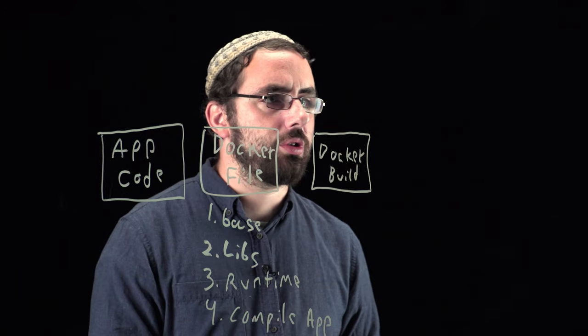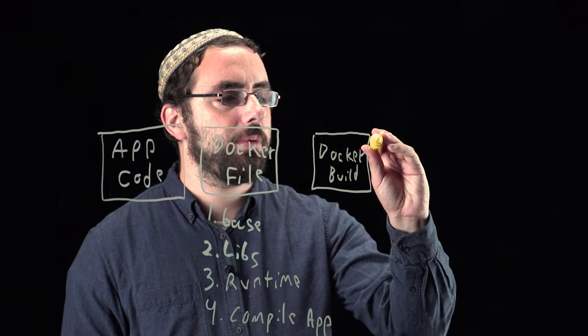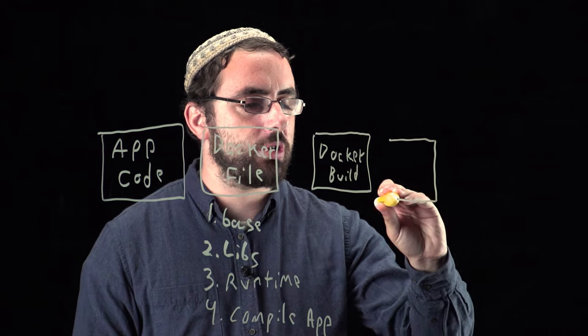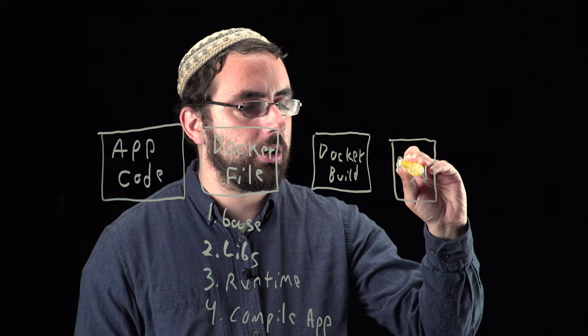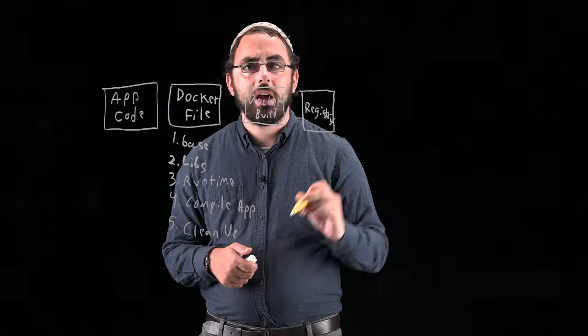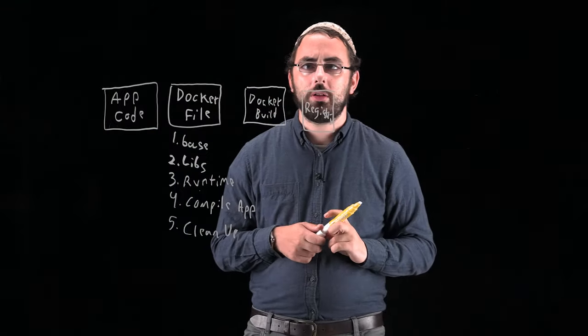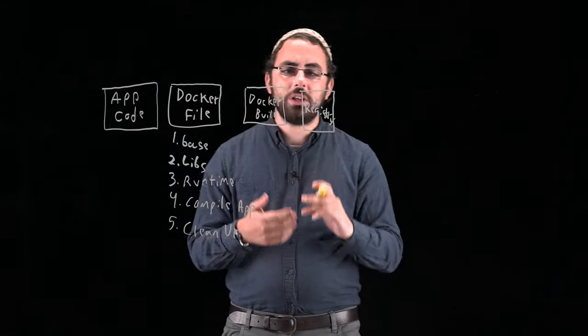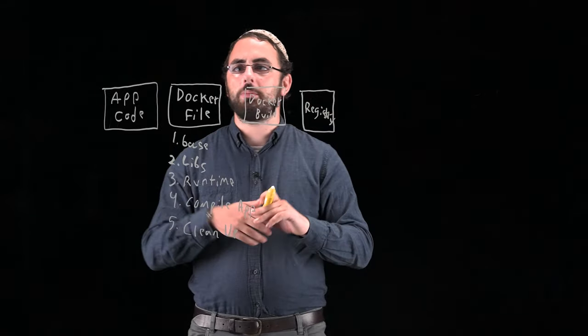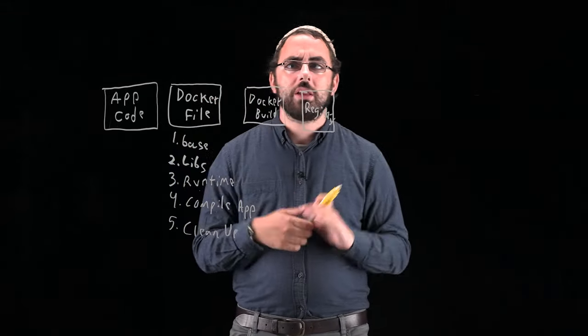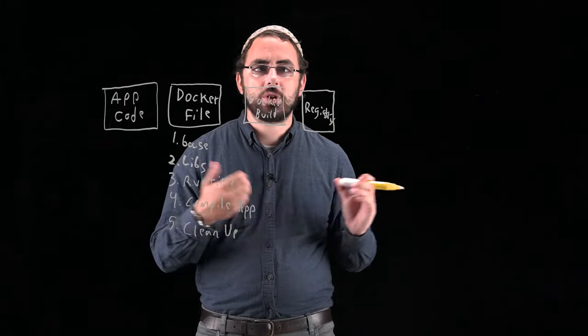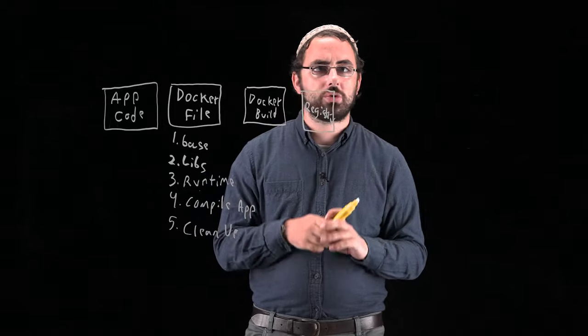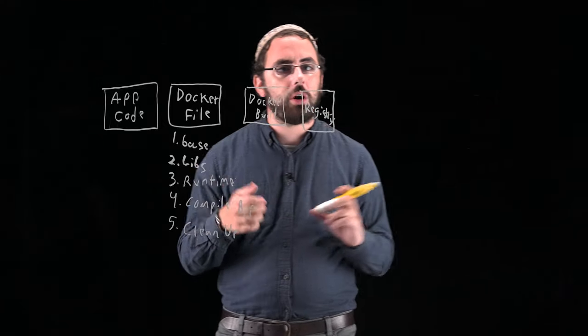Once we have that image created, our next step is going to be pushing that into a registry. This is a place in which we can hold our images and we can pull from there the images at any time. This could be any registry, something public like Docker Hub or ECR or GCR, or an on-prem hosted one like Harbor or Artifactory.